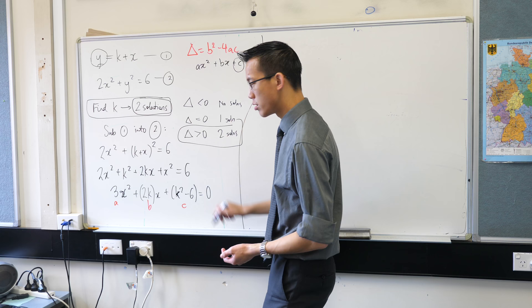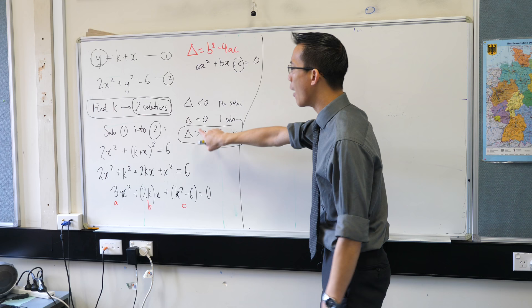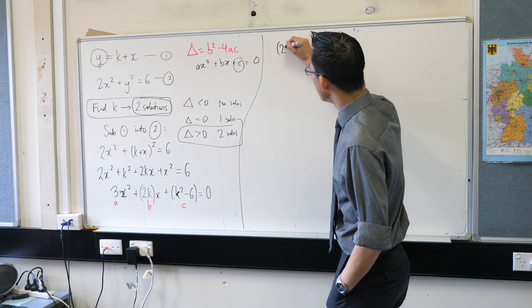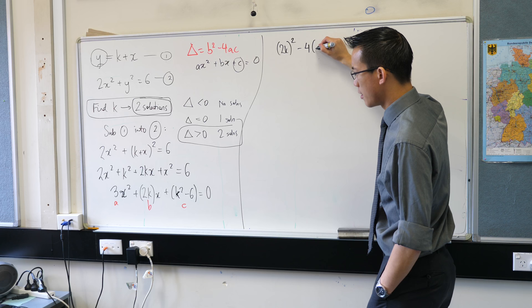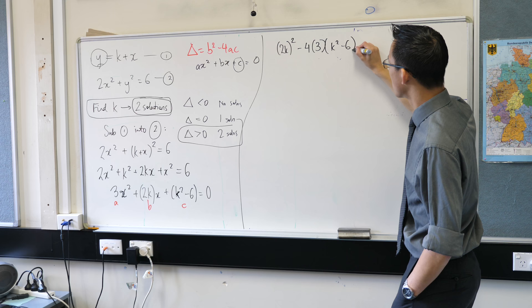This is the one where you get two solutions, so I'm gonna go with that. I'm gonna say what is the discriminant? I want it to be greater than 0, so let's do that.